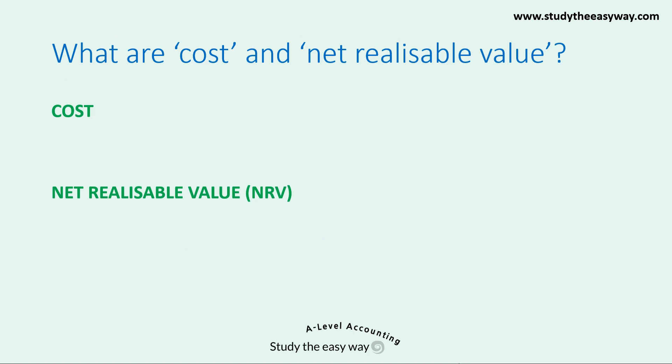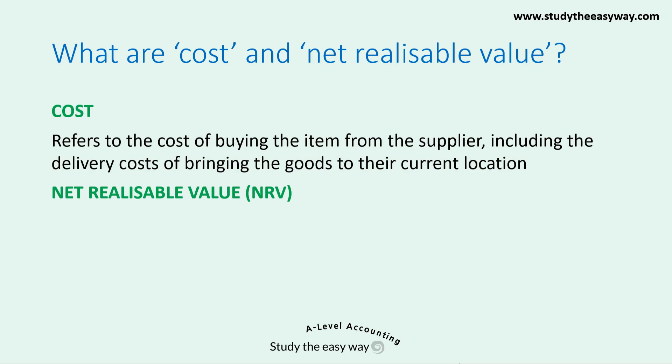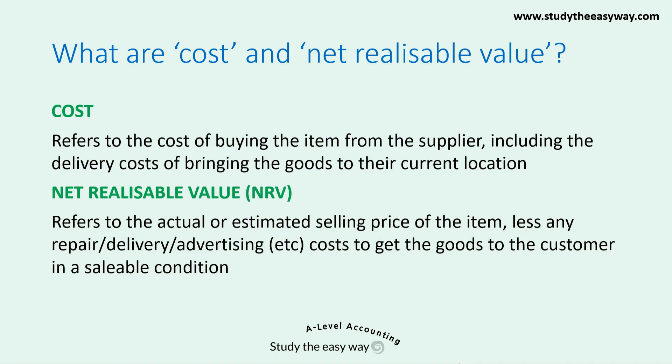So what are the terms in this rule? Let's look at cost and net realisable value and make sure we understand exactly what they mean. Cost refers to the cost of buying the item from the supplier, including any delivery costs of bringing the goods to their current location. Net realisable value is a calculated figure — notice that it's often abbreviated to NRV. It refers to the actual or estimated selling price of the item, less any costs that have been incurred to get the goods to the customer in a saleable condition. These costs include things like repair costs, delivery costs, and advertising costs, although you could come across other types of costs as well, which you would need to take into account in your calculation.